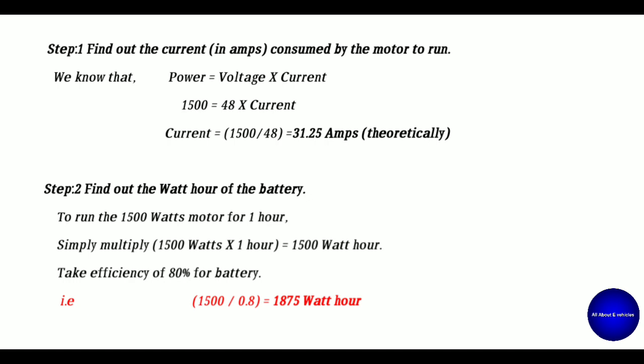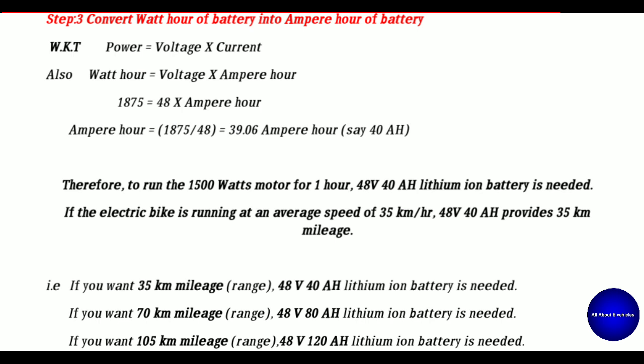So 1875 watt-hours is the required battery capacity for the lithium-ion battery. But commercially available batteries are also specified in ampere-hours, so we need to convert watt-hours into ampere-hours — that is step three. We already know that power equals voltage multiplied by current, and similarly watt-hours equals voltage multiplied by ampere-hours. Substituting: 1875 equals 48 multiplied by ampere-hours, so ampere-hours equals 1875 divided by 48, which gives 39.06 ampere-hours.